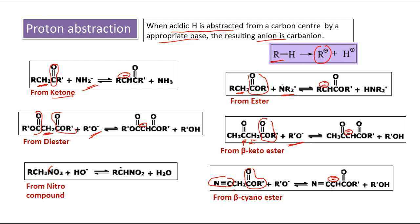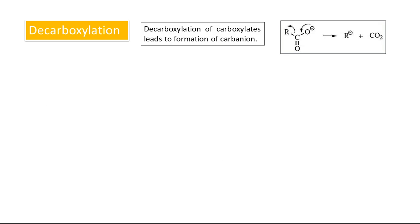The second method is decarboxylation. This is not very common but is one way carbanions can be generated. The starting material is a carboxylate anion where the R group may be an alkyl group or Ph. Decarboxylation of this carboxylate removes the C=O part as CO₂. The remaining part has a C-C bond with negative charge over carbon — that is the carbanion.